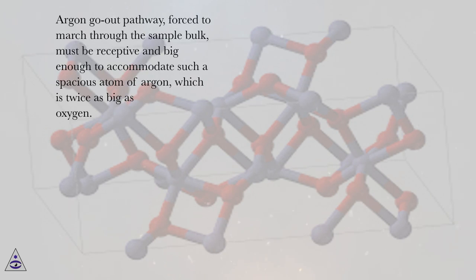Argon go-out pathway, forced to march through the sample bulk, must be receptive and big enough to accommodate such a spacious atom of argon, which is twice as big as oxygen.